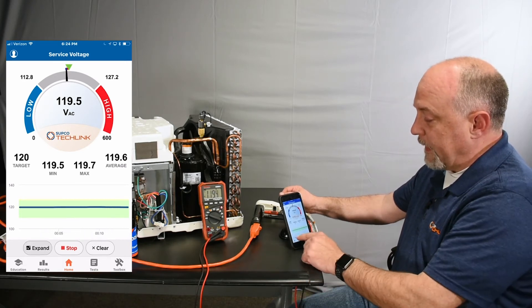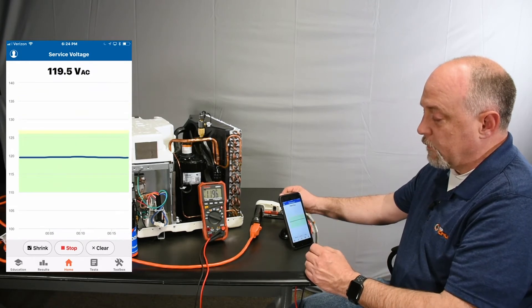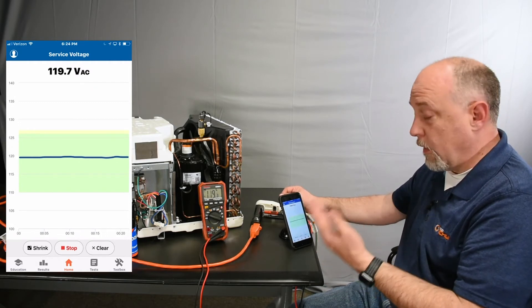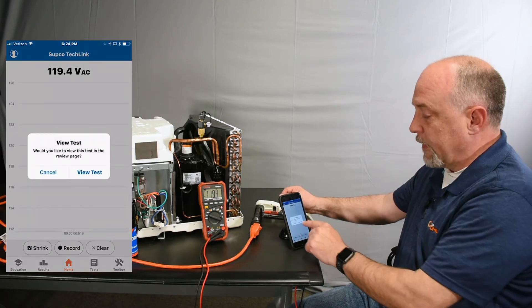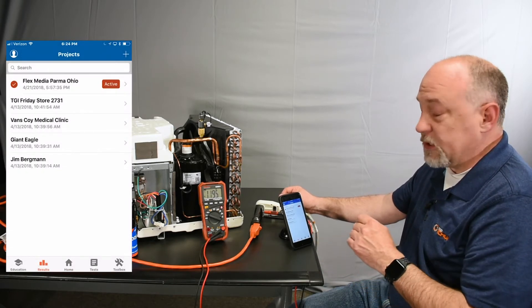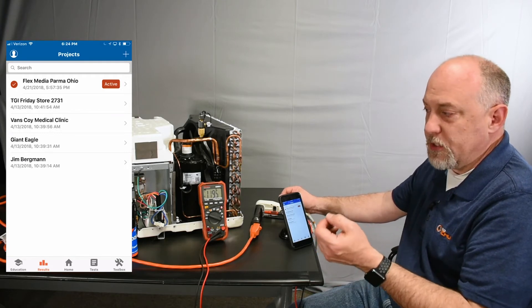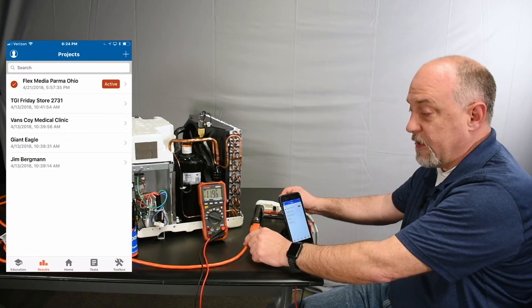If I expand this, you can see we're right in the center of what our service voltage should be. This is just a test we would do with the system in off mode. I'll hit stop and record that. The difference between service voltage and utilization test is service voltage is what we have delivered—the electrical pressure coming out of the end of this cord.